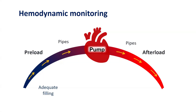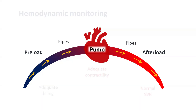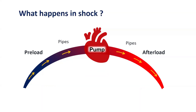In order to have good perfusion there should be adequate filling, adequate contractility, and a normal systemic vascular resistance. What happens in shock is either there is too little to pump, or there is myocardial dysfunction where pump failure occurs, or the SVR can be very variable — resulting in either cold or warm shock.